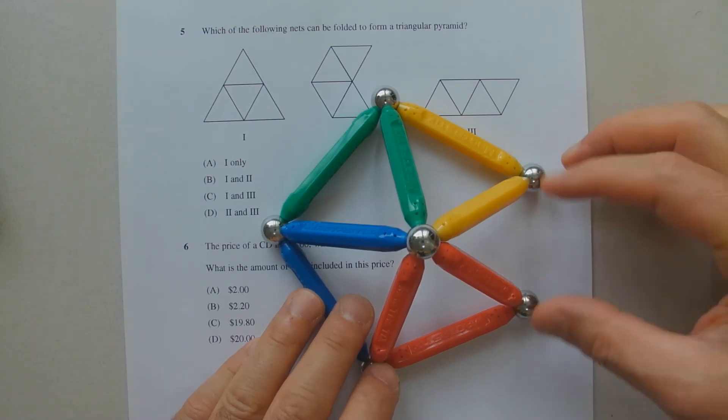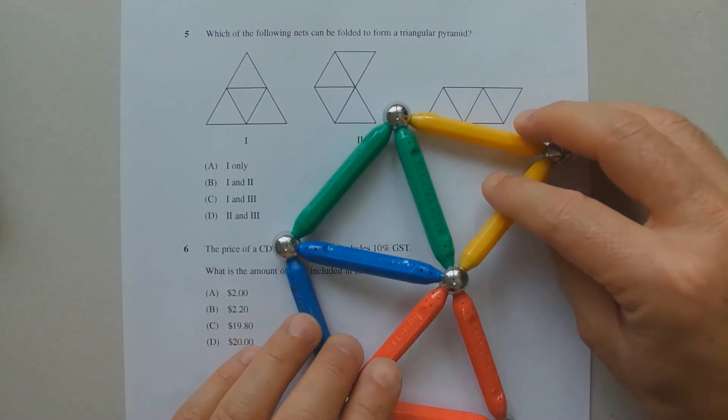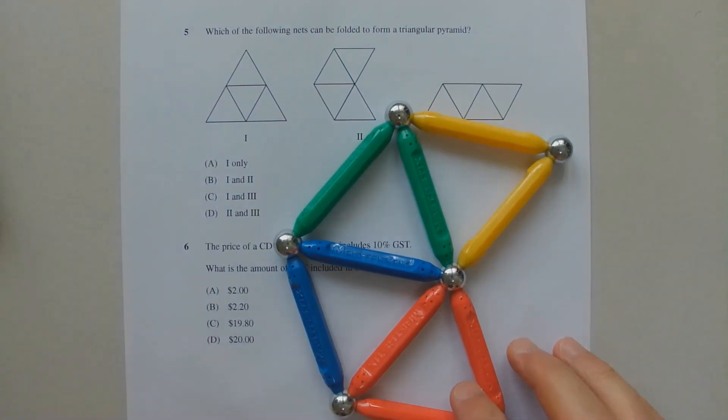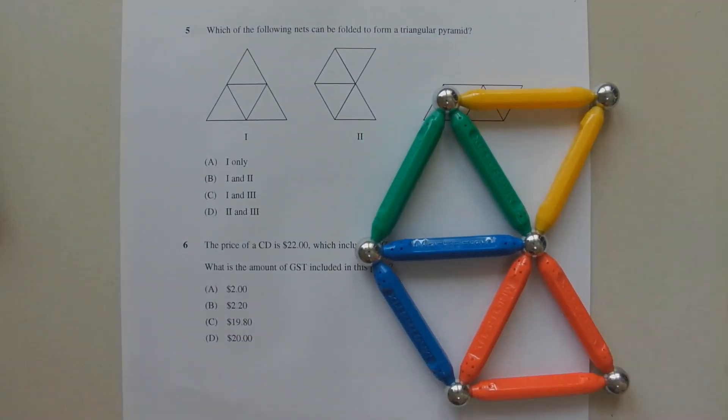but the question is asking for a net of a triangular pyramid, not a square-based pyramid. So net number two will not work.